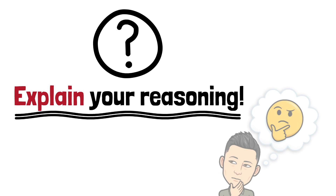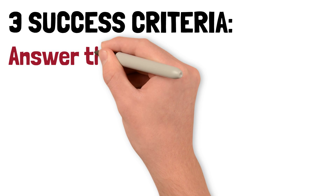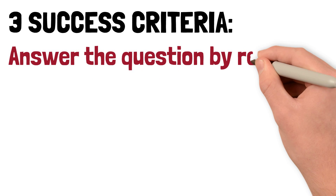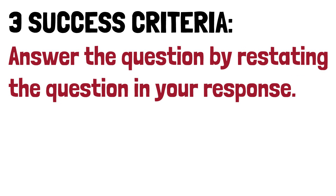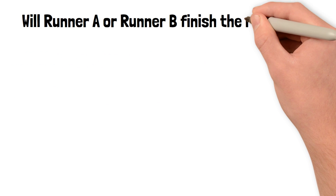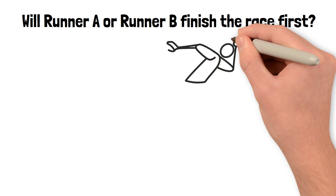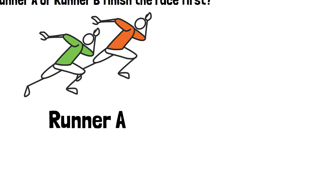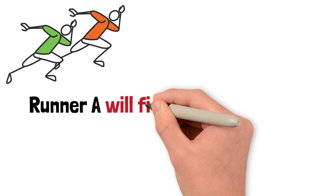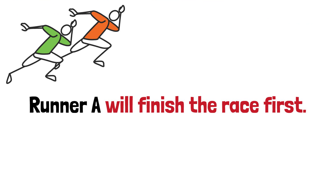So, what makes a great math explanation? Well, it should meet three success criteria. First, answer the question being asked by restating the question in your response. For example, if you're asked whether runner A or runner B will finish the race first, don't just write runner A. Instead, write runner A will finish the race first.